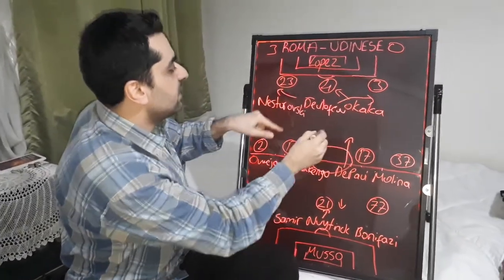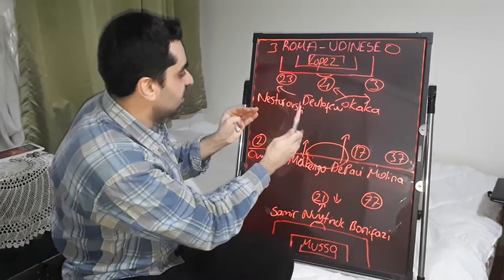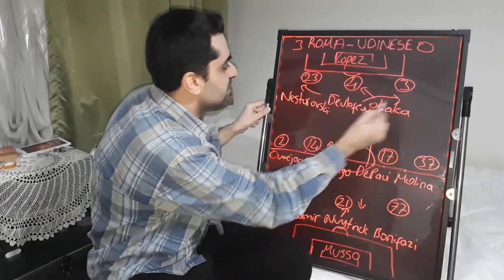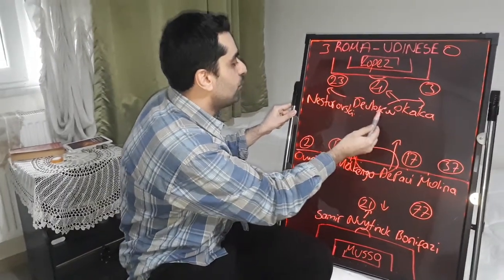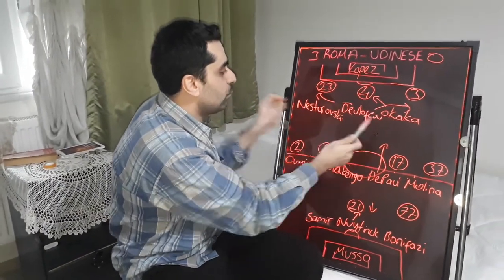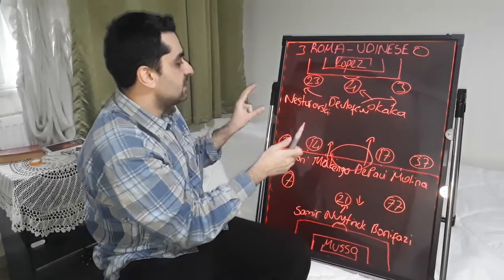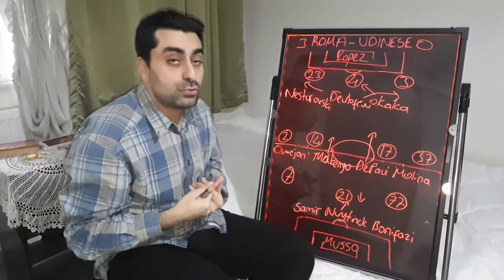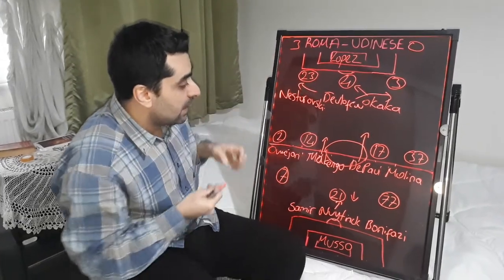The three forwards rotated positions — sometimes Nestorovski moved to the right, sometimes Derifou came to the left, and Okaka stayed central. But Udinese couldn't find a goal against Roma.